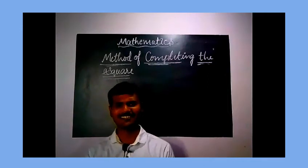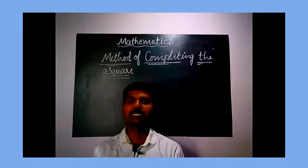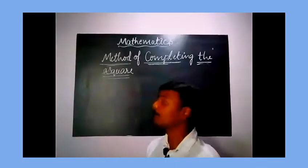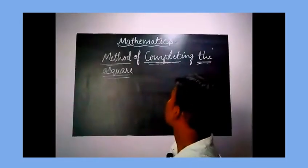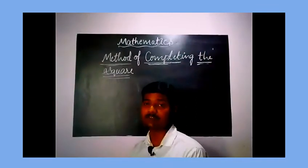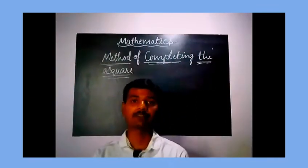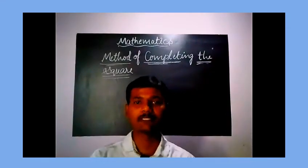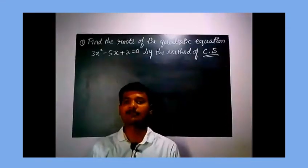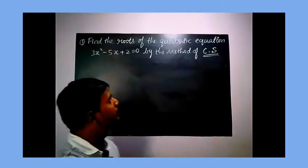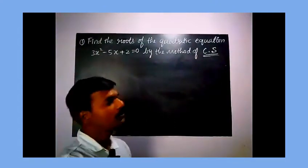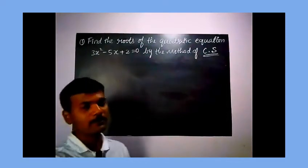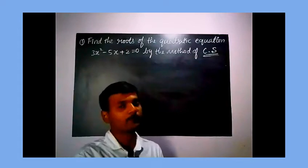Today I'm here to discuss a topic in mathematics: the quadratic equation — specifically, the method of completing the square to find the roots of a given quadratic equation. Let us discuss this topic with some examples. Find the roots of the quadratic equation 3x squared minus 5x plus 2 equals 0 by the method of completing the square.